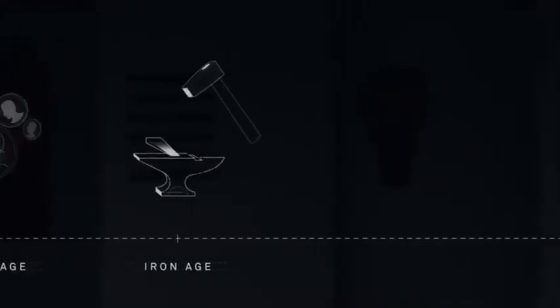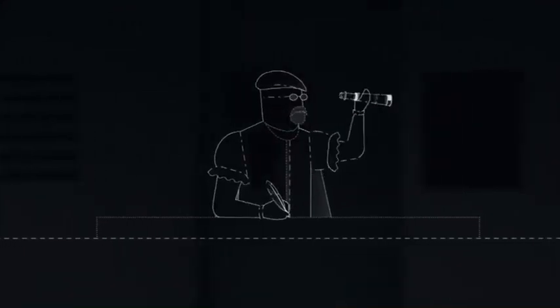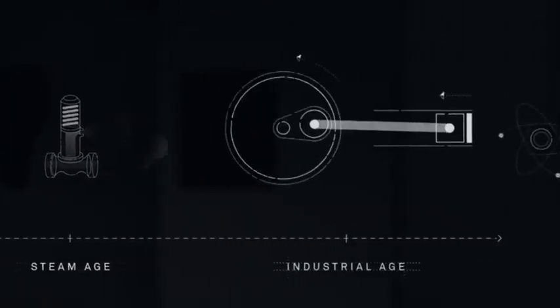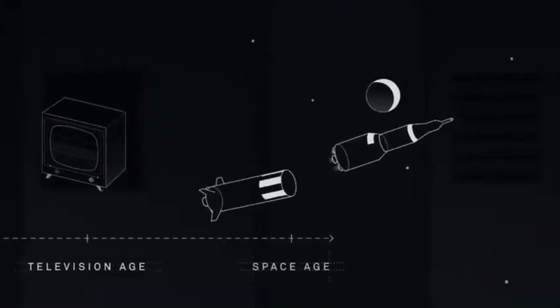Pop quiz: if you were able to look back on the present from deep in the future, what age would you say we're living in? From the beginning of humanity we've seen prevailing technologies marked with milestones: the Stone Age, the Bronze Age, the Iron Age — all occurring many thousands of years ago. The last couple of hundred years have seen a flurry of ages: the Steam Age, the Industrial Age, the Atomic Age, the Television Age, the Space Age — to name but a few. I think this age could be classified as the Glass Age.